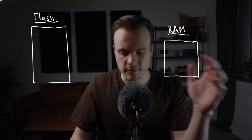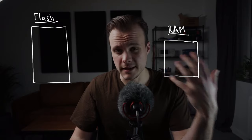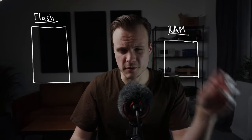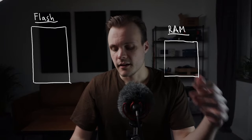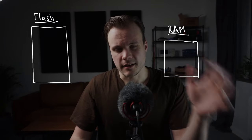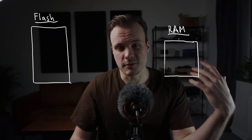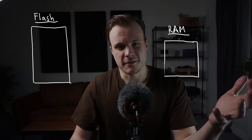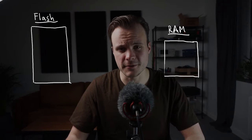On a microcontroller you're going to have two types of memory: flash and RAM. Some microcontrollers also have a third type called EEPROM, which is usually a smaller type of memory used for storing configuration data. But I'm not going to talk about that here because what you're mostly going to be interested in is the flash and the RAM. Technically, flash is a kind of EEPROM, but flash and RAM work differently.